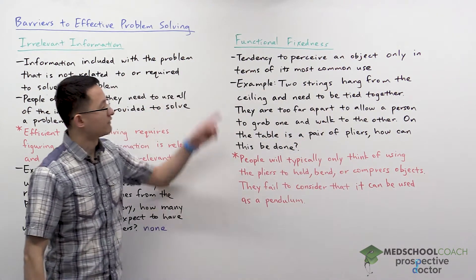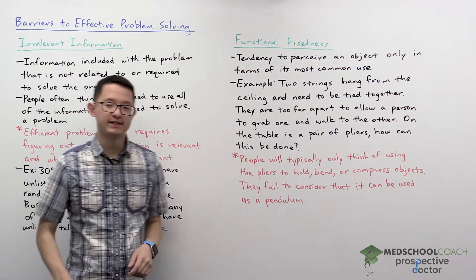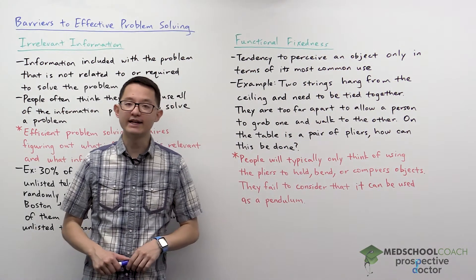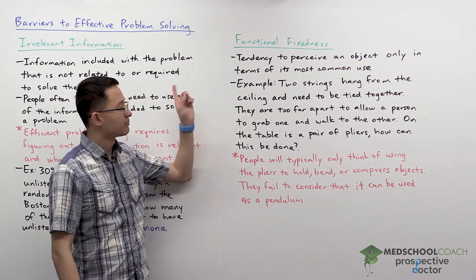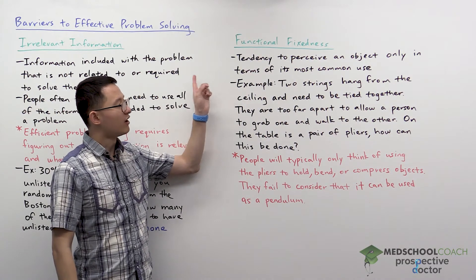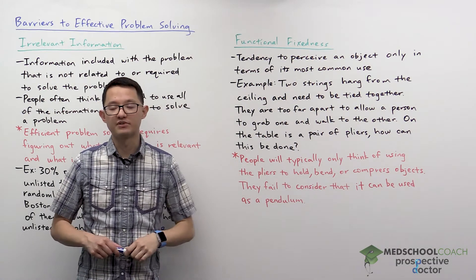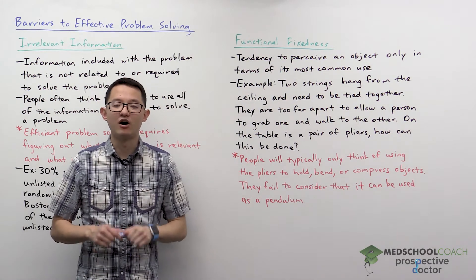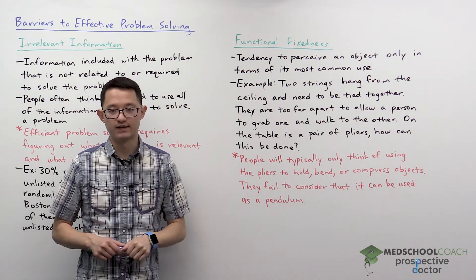Next, let's go over functional fixedness. This is the tendency to perceive objects only in terms of their most common uses.